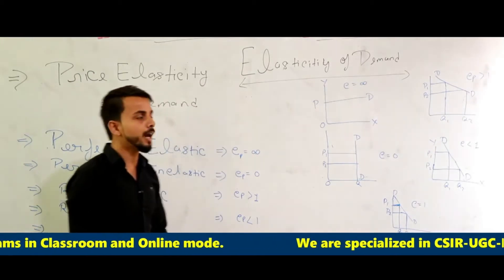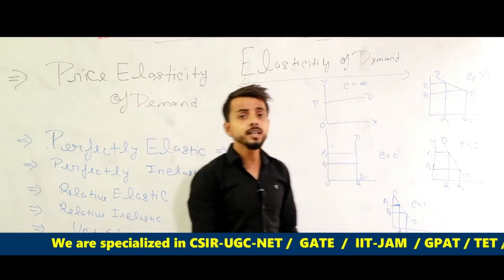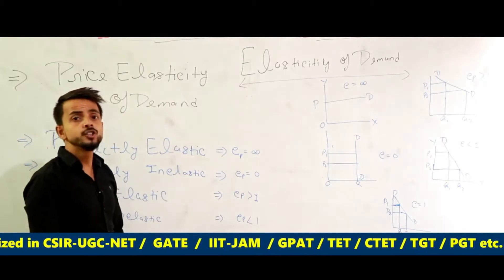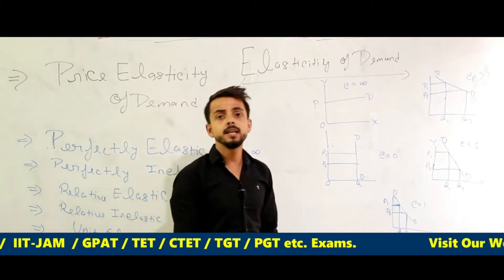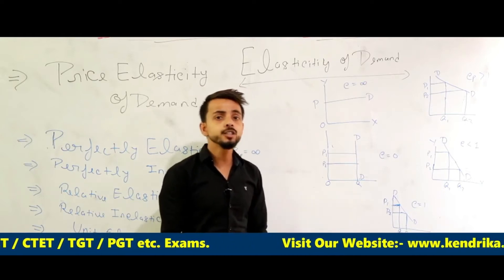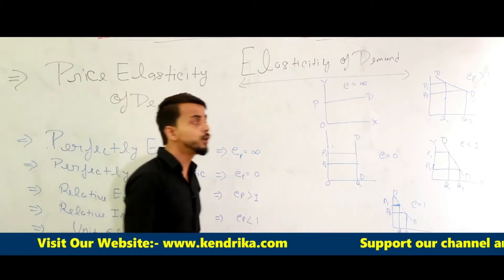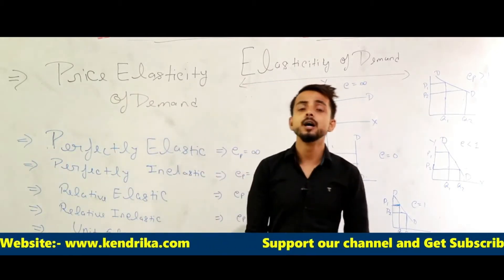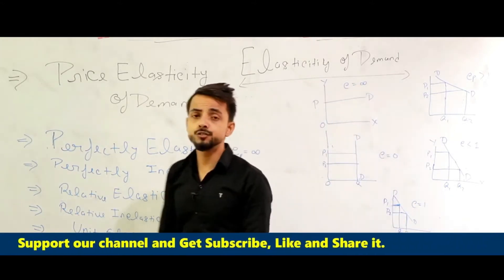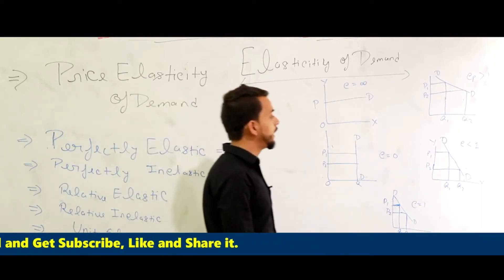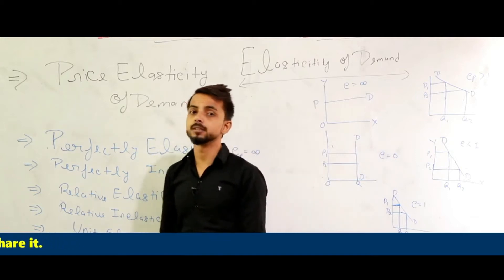What is price elasticity of demand? Price elasticity of demand shows in what manner a change in price will reflect a change in demand. If we divide the change in quantity demanded by the change in price and multiply by 100, we can calculate the price elasticity of demand. It has five types, which are very important and come up frequently in UGC NET Paper 2 of Commerce.